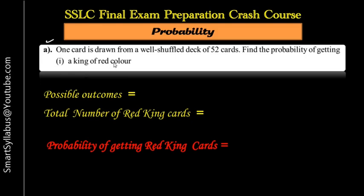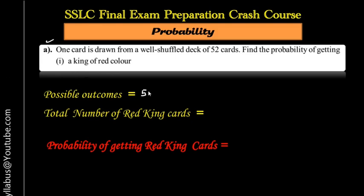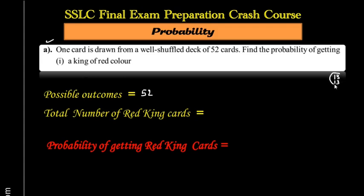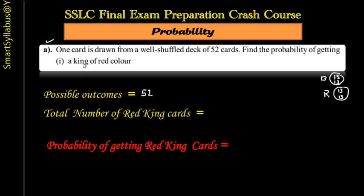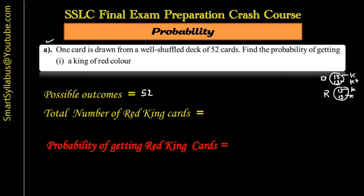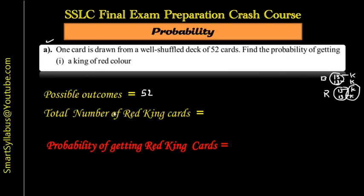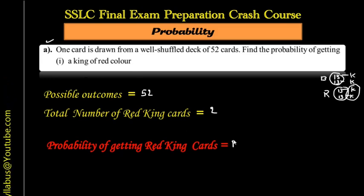One card is drawn from a well-shuffled deck of 52 cards. Find the probability of getting a king of red color. Possible outcomes: 52. Now, the total number of red king cards: there are 13 spade cards and 13 club cards — both black — and 13 diamond cards and 13 heart cards — both red. In every set of 13 there is a king, so there are four king cards total. We need a king of red color, so only two red kings exist.